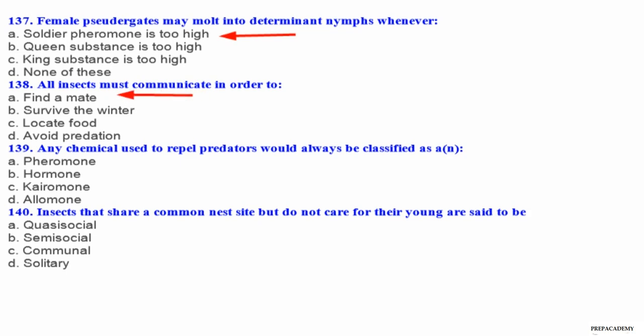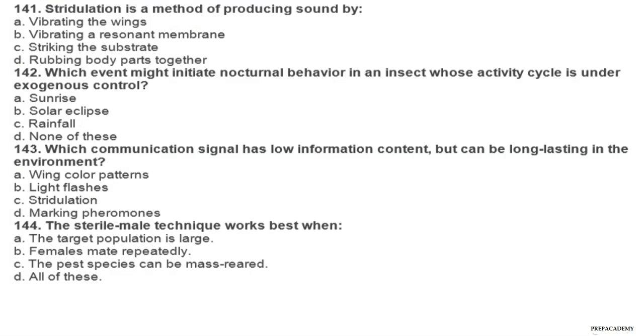Question 139. Any chemical used to repel predators would always be classified as: A pheromone, B hormone, C kairomone, D allomone. Question 140. Insects that share a common nest site but do not care for their young are said to be: A quasi-social, B semi-social, C communal, D solitary. Question 141. Stridulation is a method of producing sound by: A vibrating the wings, B vibrating a resonant membrane, C striking the substrate, D rubbing body parts together.